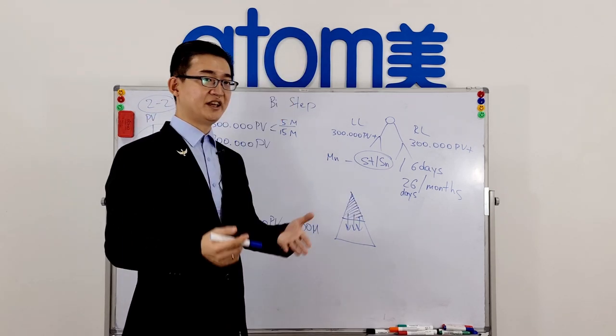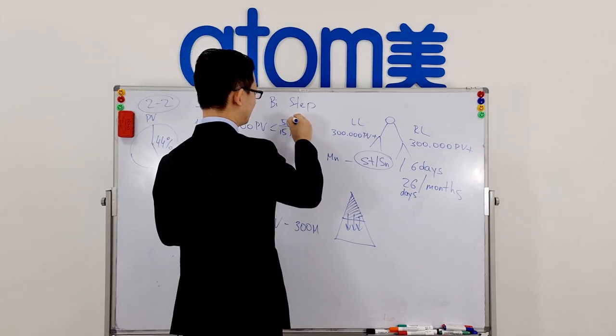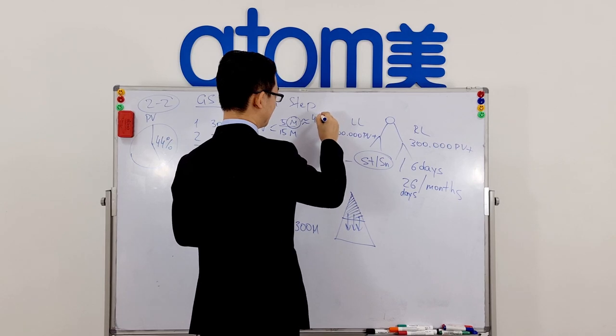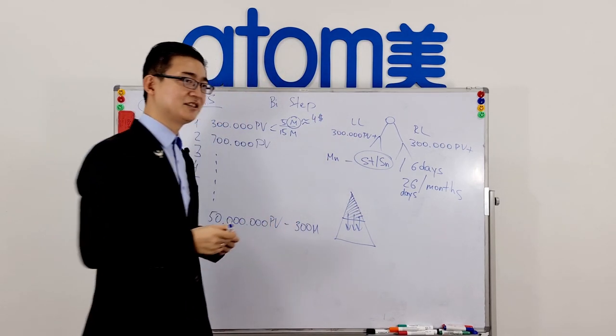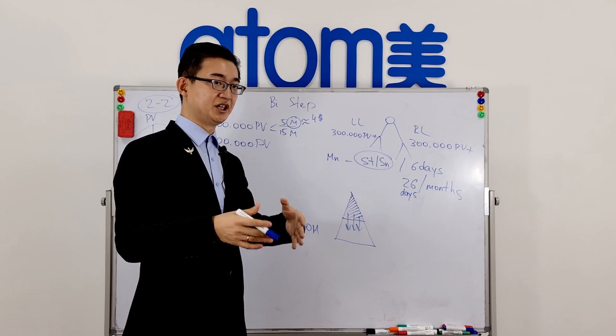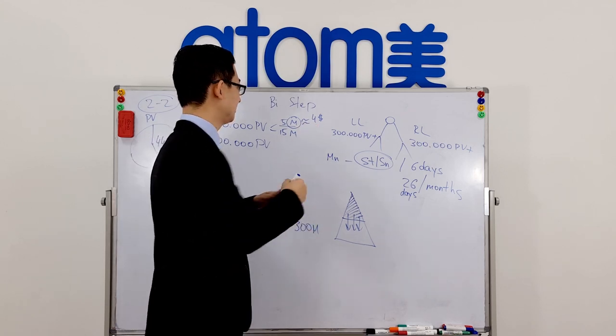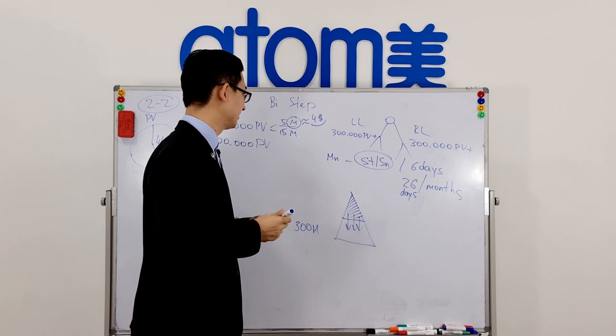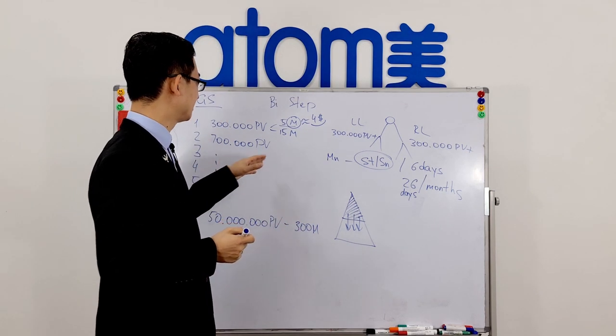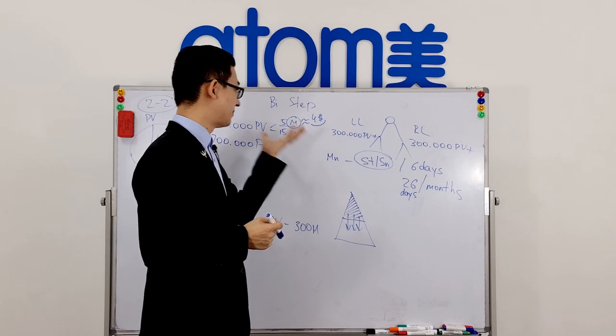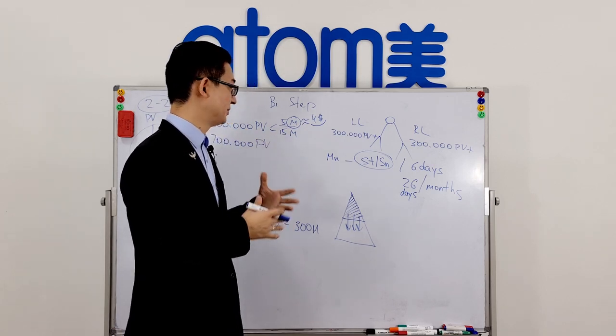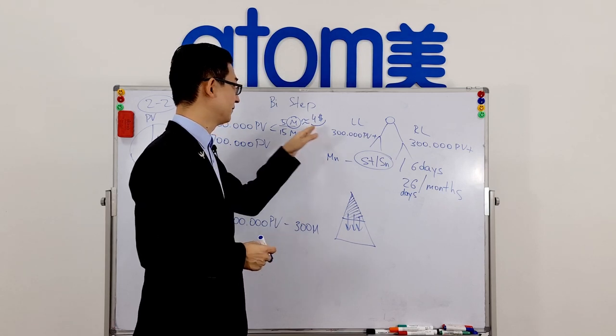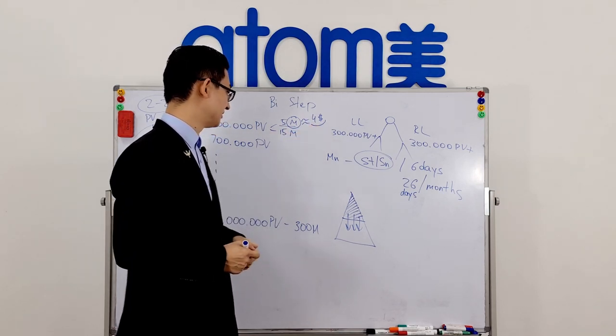For your understanding, I will tell you that one multiplier equals approximately four US dollars. This is not exact because from country to country it may vary, and this amount of money is not constant. It also depends on the total sales and the amount of binary steps closed. But approximately for convenience, you can count this as four US dollars.